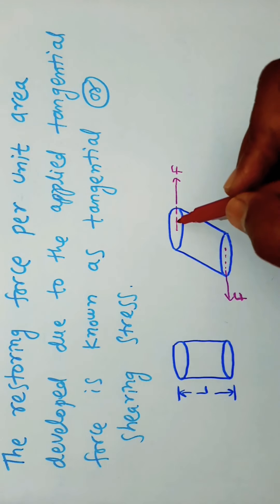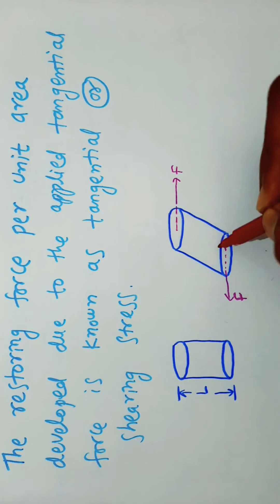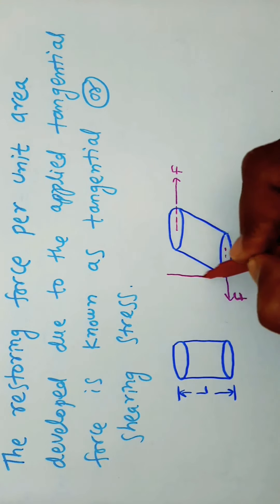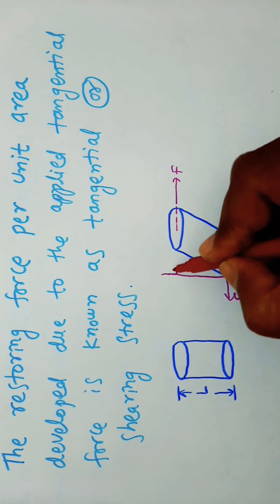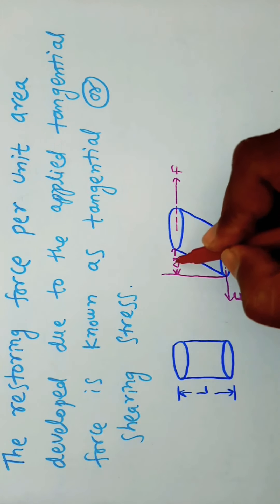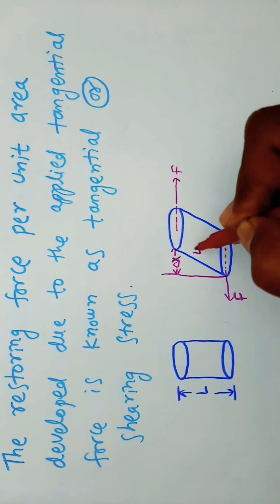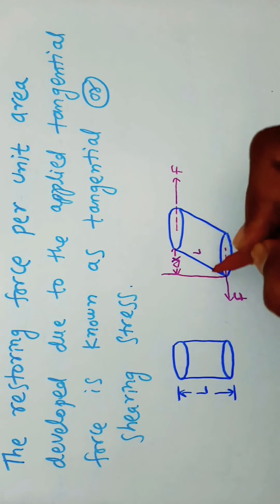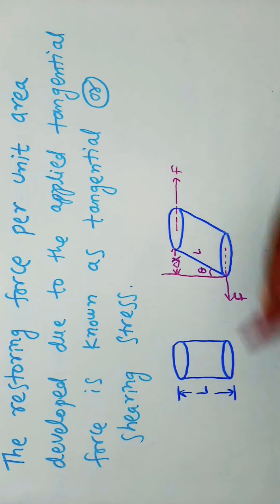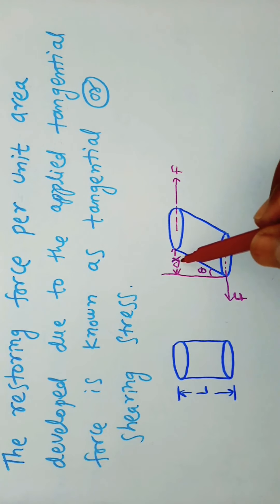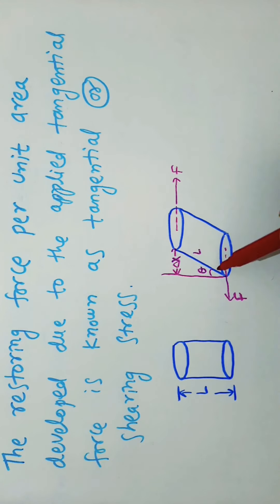Here, the relative displacement of the two faces is Δx and the length of the cylinder is L, and the angle is theta. Shearing strain is defined as the ratio of relative displacement of faces to the length of the cylinder.